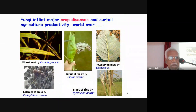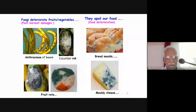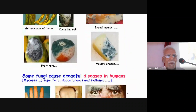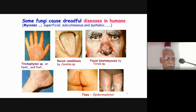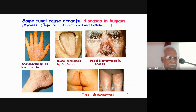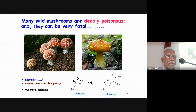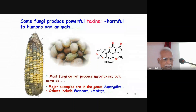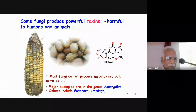Fungi inflict major crop diseases and curtail agricultural productivity. There are many fungal diseases in the plant system. Even post-harvest — fungi deteriorate fruits and vegetables, spoil bread, cause fruit rot and moldy cheese. In the human system, some fungi cause dreadful diseases: superficial, subcutaneous, and systemic mycoses. Then there are wild mushrooms like Amanita muscaria which are deadly poisonous. Some fungi like aflatoxin-producing ones cause powerful toxins. For all these reasons, fungi were said to be very bad organisms.